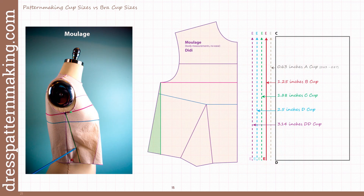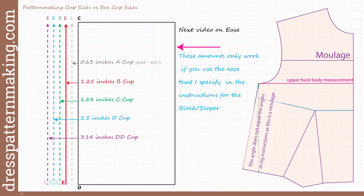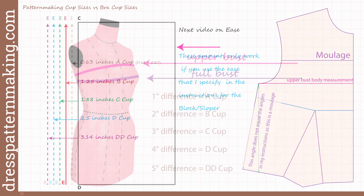Someone may look at my instructions and think the angle of the side seam on Didi's moulage looks far more than five-eighths of an inch out from the upper bust rectangle. That's because this is a moulage without ease, not a block with ease. The amounts I give in the instructions work only if you use the amount of ease I specify. If you add only two inches instead of the five inches I recommend, or if you remove all ease, those measurements — five-eighths for A cup, one and a quarter inches for B cup — will not work.